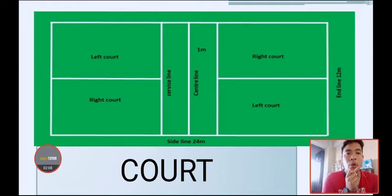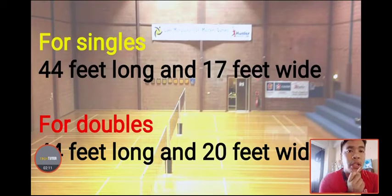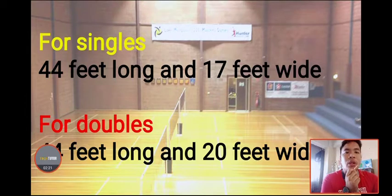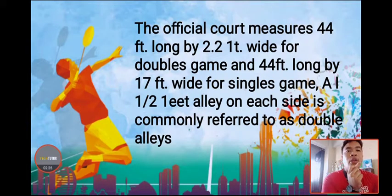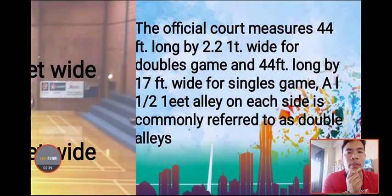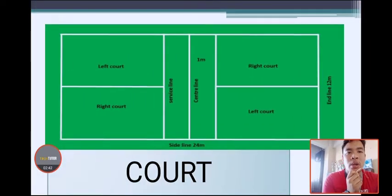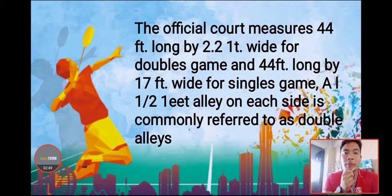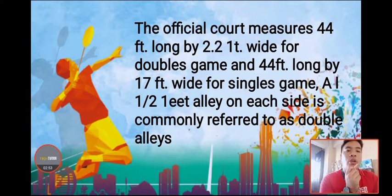To remember: for singles, the court is 44 feet long and 17 feet wide; for doubles, it is 44 feet long and 20 feet wide. The official court also has a side alley on each side commonly referred to as the double alley. The double alley measurements differ from the singles court — the doubles court has a wider extension.